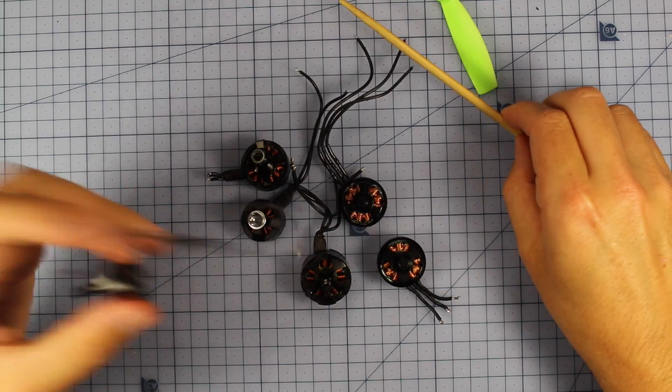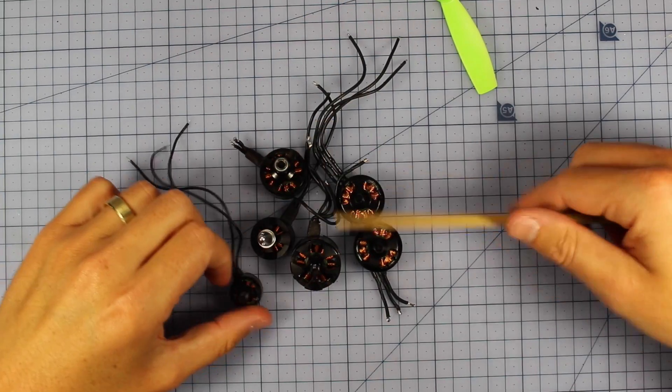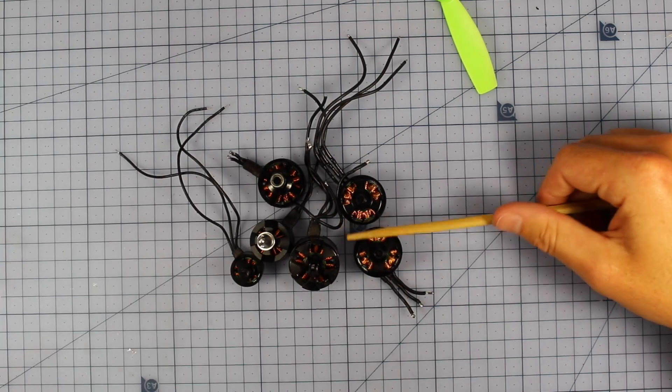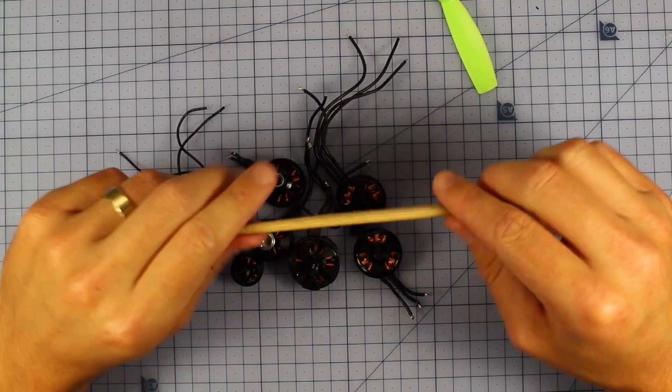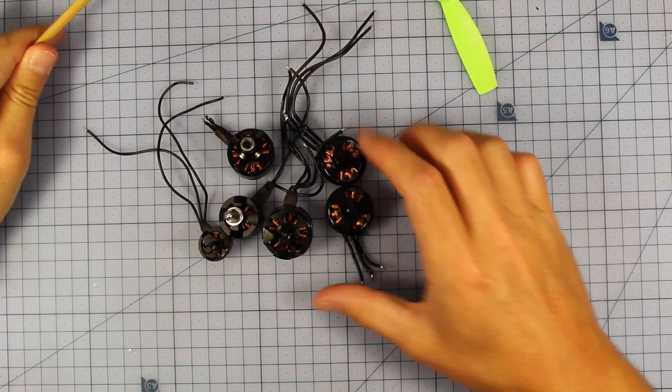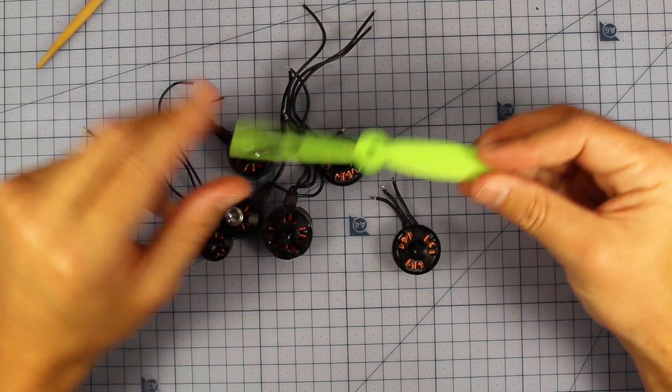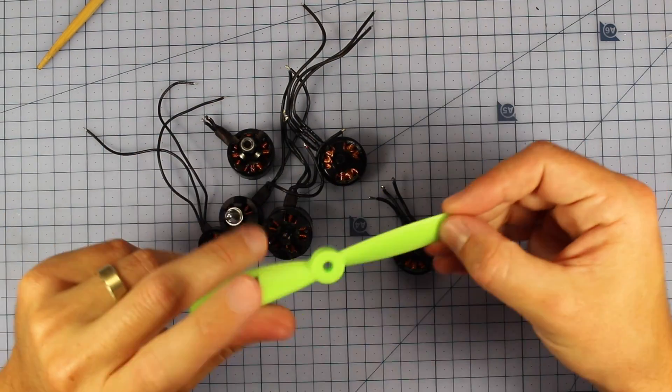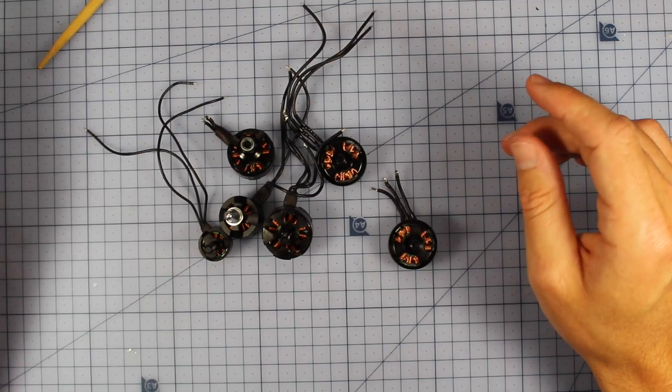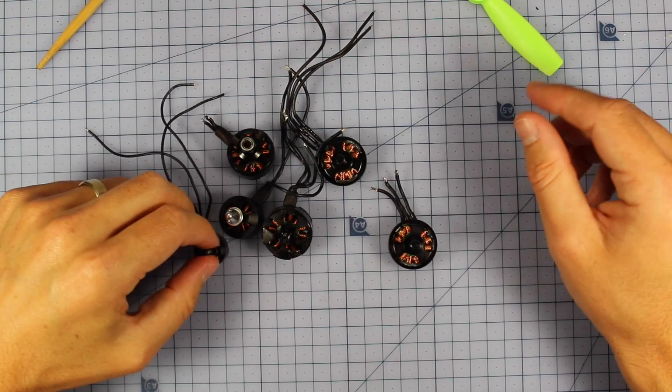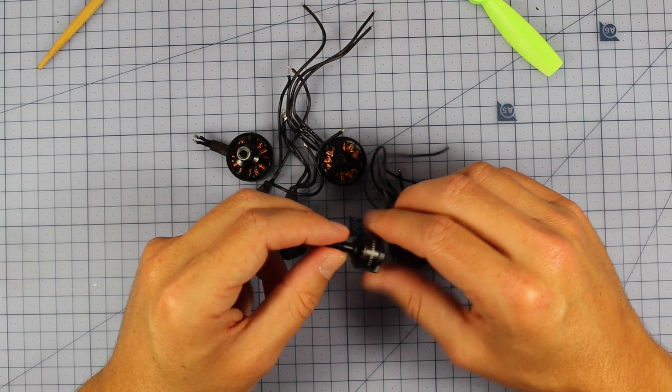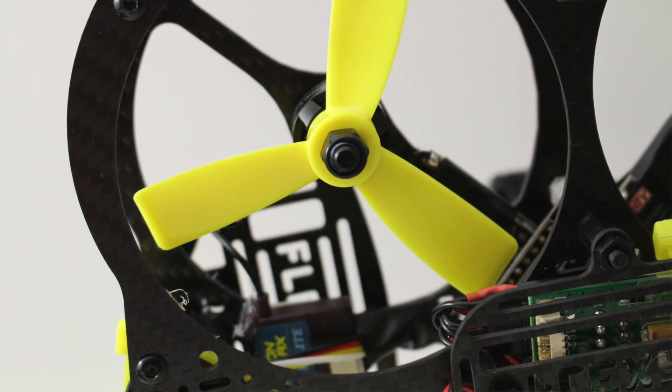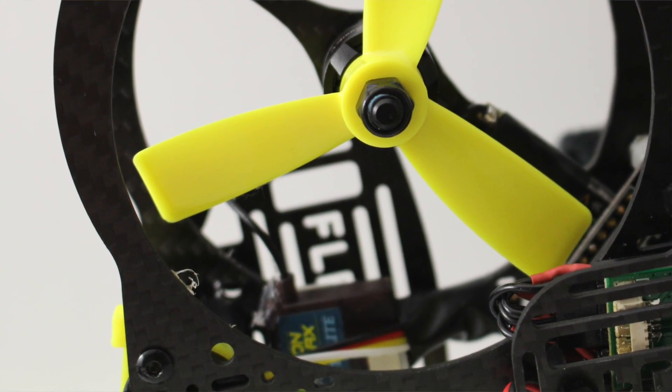The next thing we're going to look at is what is the recommended voltage to run these things at. That's all got to do with how many amps they can handle. Just a quick lesson here: depending on the size of the prop you put on your motor will determine how many amps it actually pulls out. For example, this thing is going to pull barely any amps because it's going to be running 3 inch props, so it shouldn't be pulling too many.